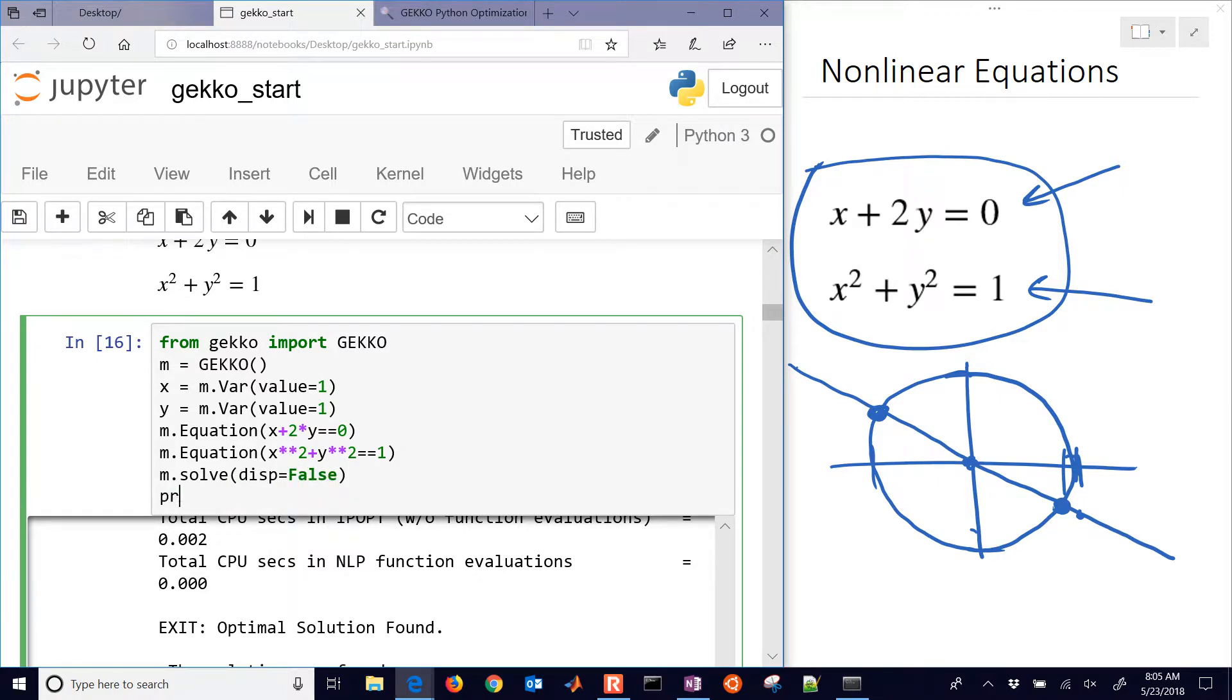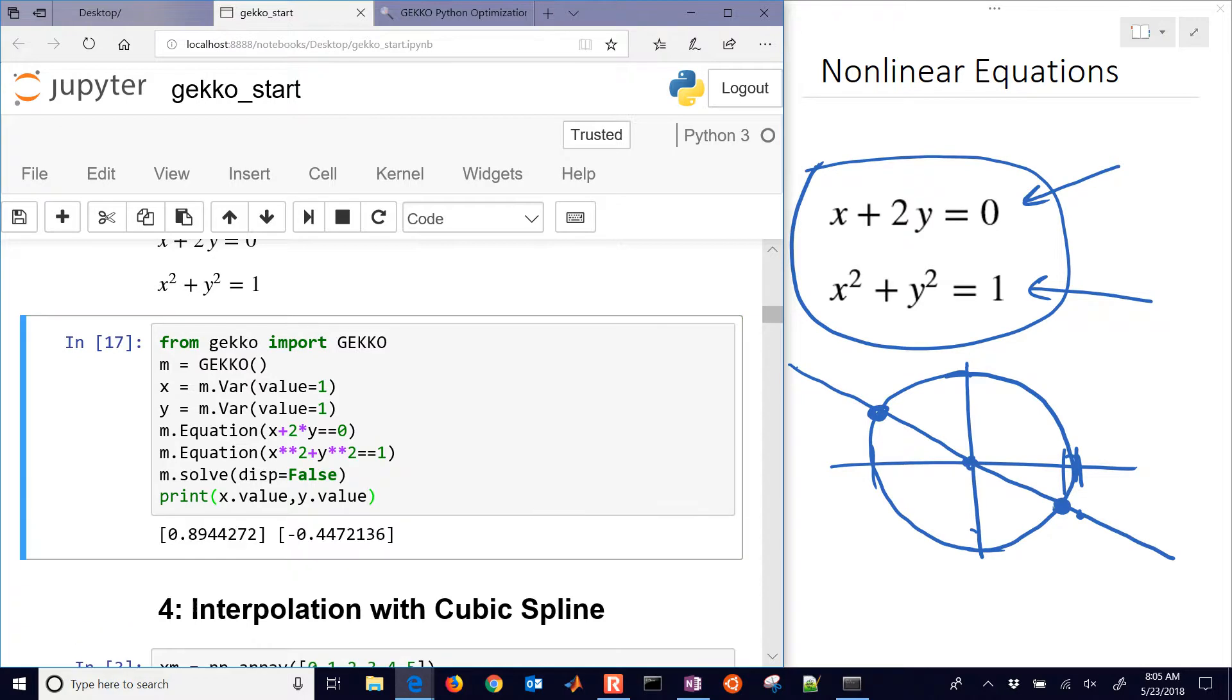And then I'll do print, and we'll have x.value and y.value. Okay, so there are the two values that it came up with, x equals .89 and y equals negative .45.